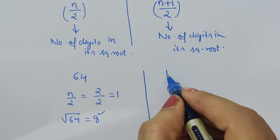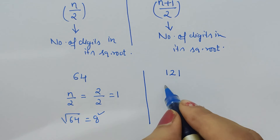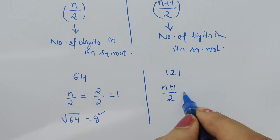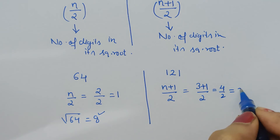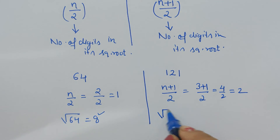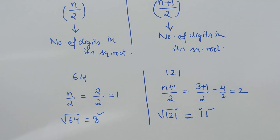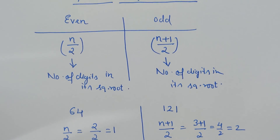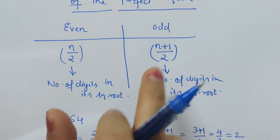Now let's take an example with an odd number of digits: 121. Here we use the formula (n + 1) / 2. There are 3 digits, so (3 + 1) / 2 = 4/2 = 2, meaning its square root will have two digits. And it is very simple — everyone knows the square root of 121 is 11, and it has two digits.